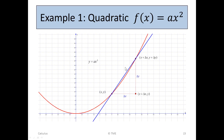Here's the function y equals ax squared shown in red. We can see it comes down, changes direction, is horizontal for a moment, and then goes up and doesn't return. As we move from x to x plus delta x, we move out a certain amount and up a certain amount, and we can see that it has a slope value.